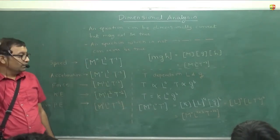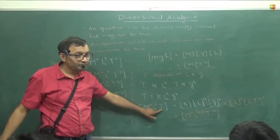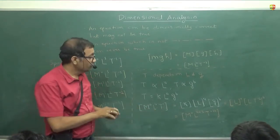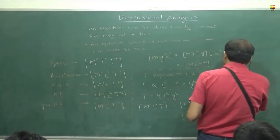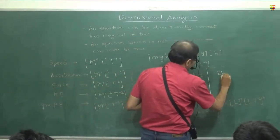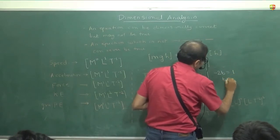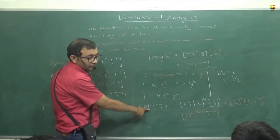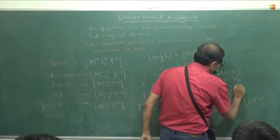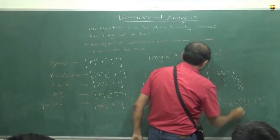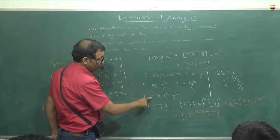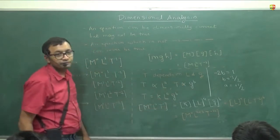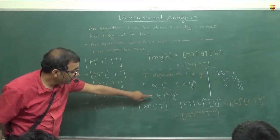Oh, minus 2B. So, minus 2B should be equal to 1. So, B will be equal to minus half. So, if you equate these two, your minus 2B should be equal to 1. So, from here, B will be equal to minus 1 by 2. And A should be what? A plus B should be 0. So, A should be equal to plus 1 by 2. Now, come back here. T will be equal to K into L to the power 1 by 2 and G to the power minus 1 by 2. So, it will become T equal to K times root L by G. Understood?